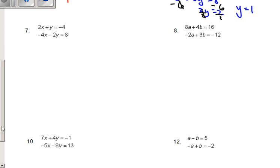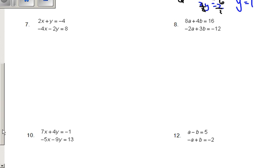So we'll start with this problem number 7 here. In this case, we have no numbers that are the same. I do see that we have 2 and 4, and we have 1 and negative 2 there. So I'm going to multiply the top equation by 2 so that I make some opposites here. I'm going to multiply. I get 4x plus 2y equals negative 8. My bottom equation remains unchanged. Negative 4x minus 2y equals 8.